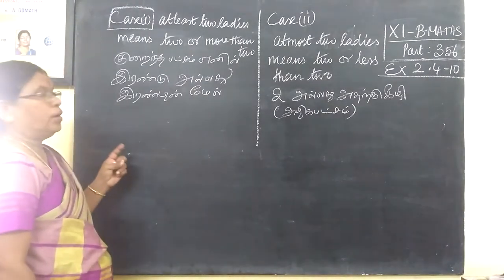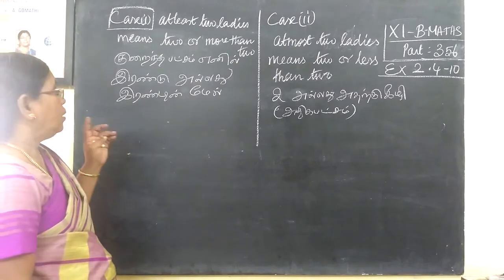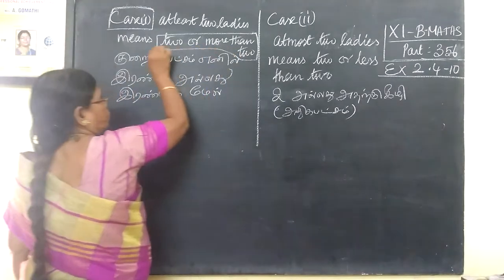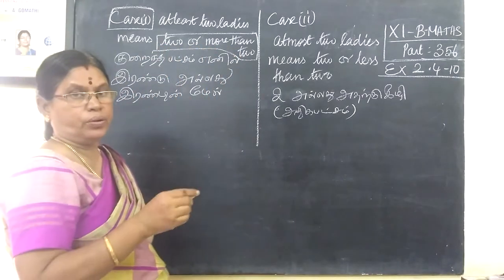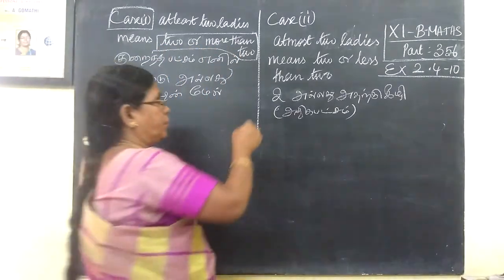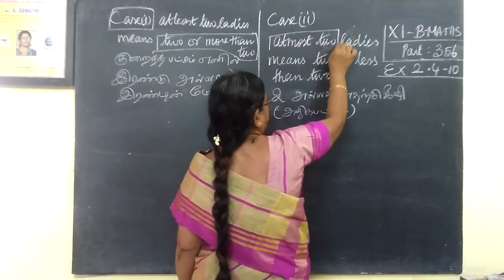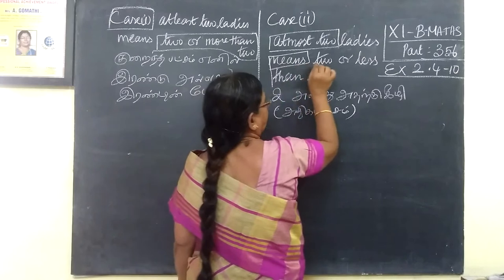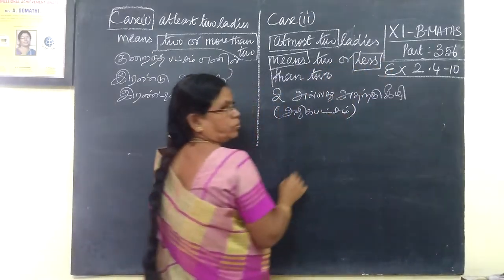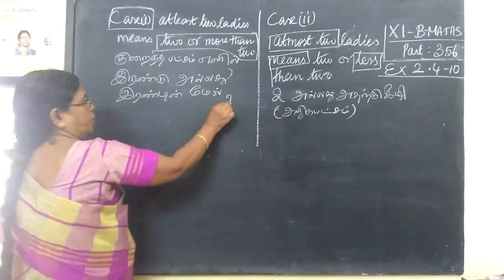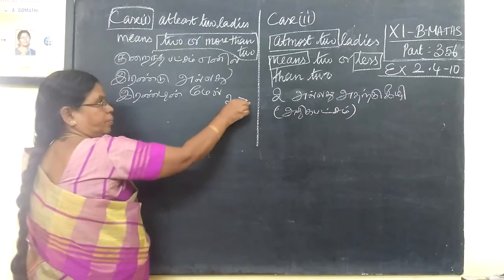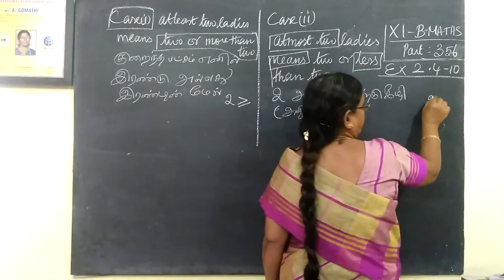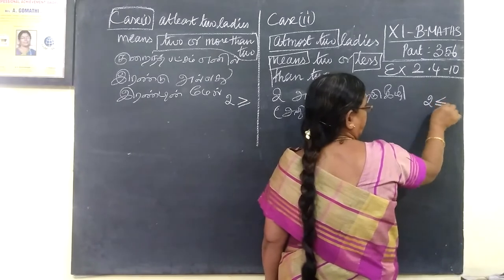At least 2 means more than or equal to 2. That means less than two is one or zero. That's why less than two is one. So at least two means more than two.